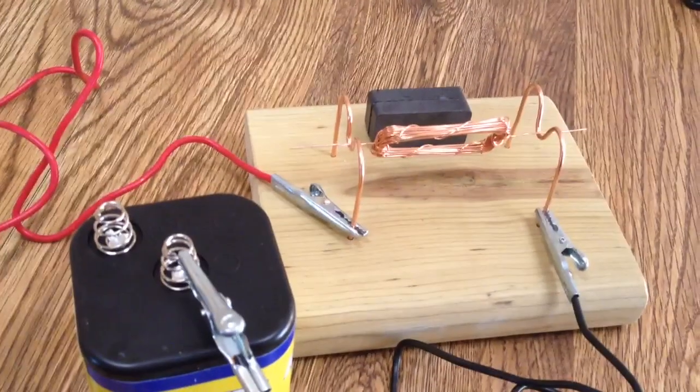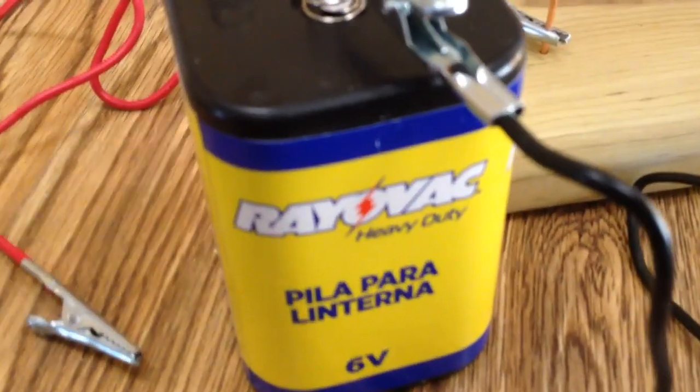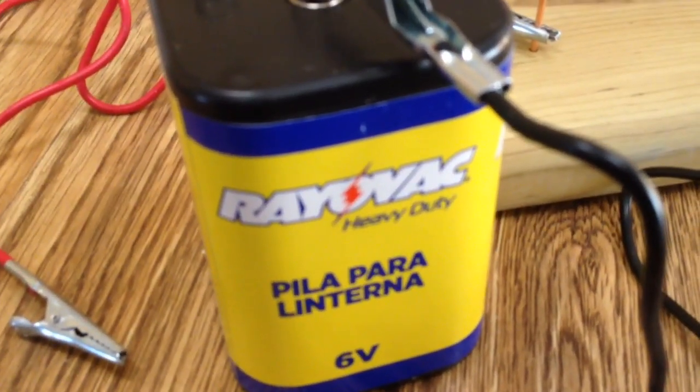This is a demonstration of a simple DC motor. What we have here is a six-volt lantern battery and an alligator clip.